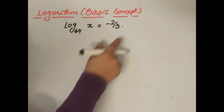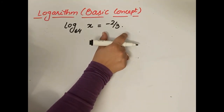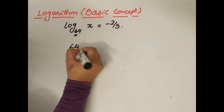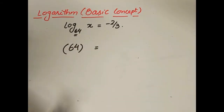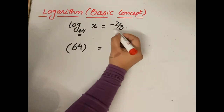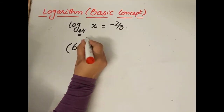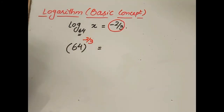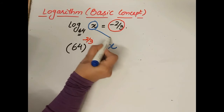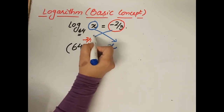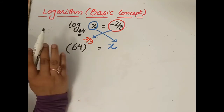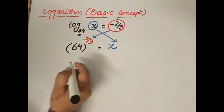Let's take another example. This is the logarithmic form. To convert it to exponential form: whatever is the base of the log form will be the same base of the exponential form. The number after the equal sign becomes the power of that base, and the argument of the log comes after the equal sign in exponential form. Let's evaluate — we get 4 cubed.